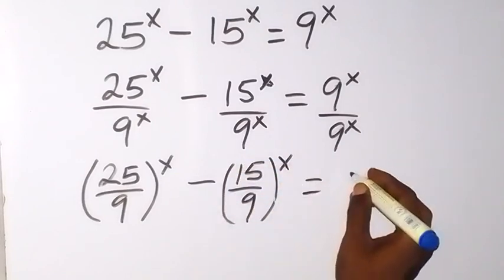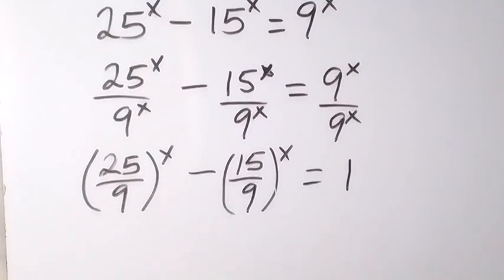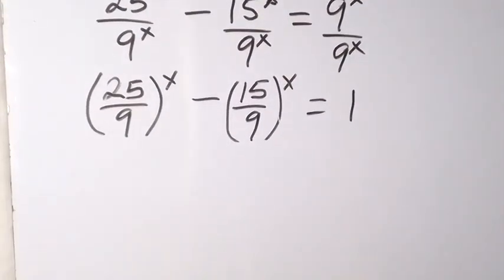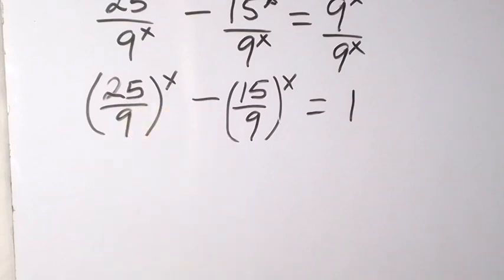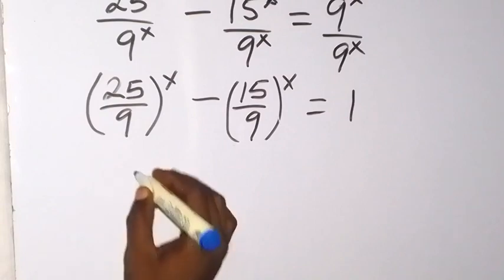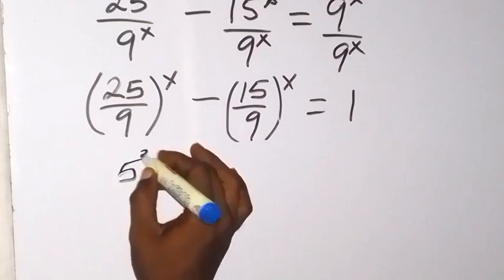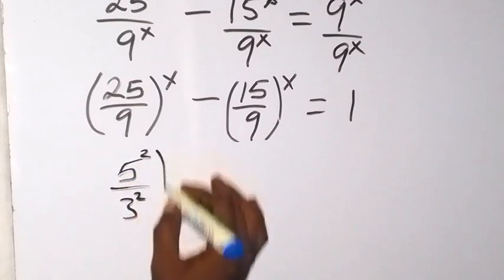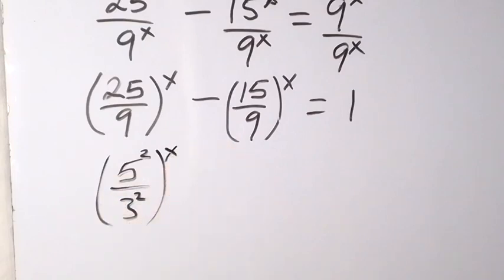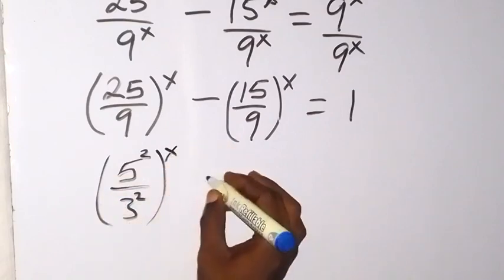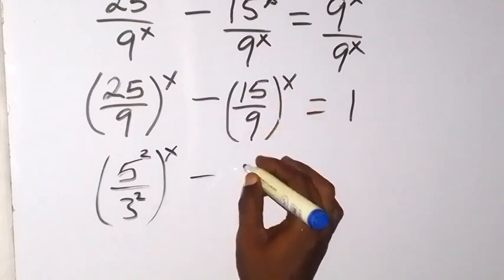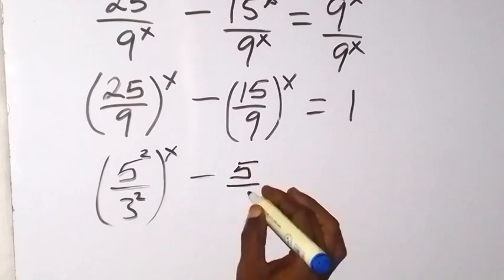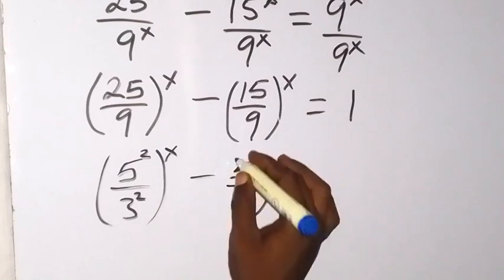And this has reduced to 1 on this side. Now I can reduce 25 — I can write it as a power of 2, and I can write 9 as a power of 2 as well, so that we have 5 squared over 3 squared, then all raised to power x. Then for this one, 3 can go into 15 giving 5, and 3 goes into 9 giving 3, so that's 5 over 3, then raised to power x.